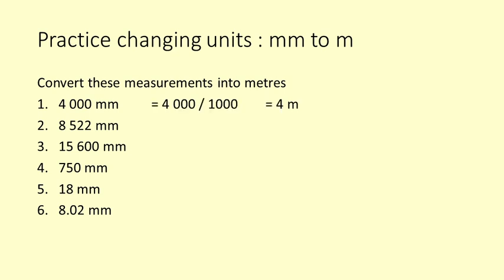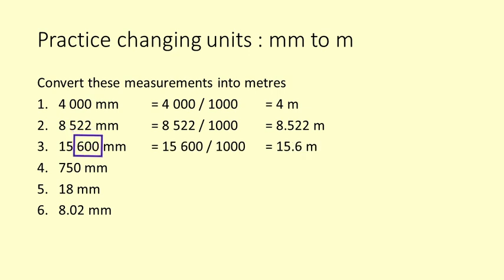4000 millimetres is 4000 divided by 1000 is 4 metres. 8522 millimetres divided by 1000 is 8.522 metres. 15,600 millimetres is 15,600 divided by 1000 is 15.6 metres. I hope you see the pattern there, we're just moving three places.